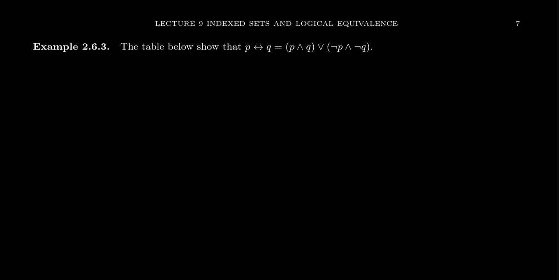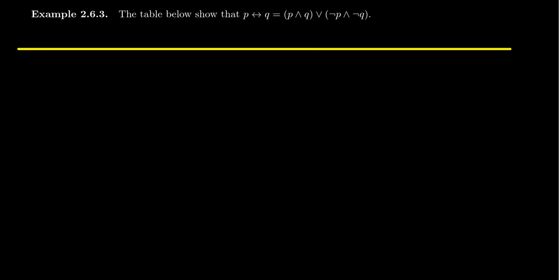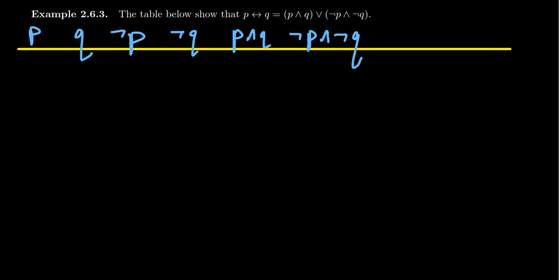Let's do two more examples of showing that statements are logically equivalent. In this example, we're going to construct a table to show that the biconditional statement P is equivalent to Q is the same thing as saying (P and Q) or (not P and not Q). Our table is not going to need many rows because we only have two primitives, P and Q. The things we need to consider are: not P, not Q, P and Q, not P and not Q, then (P and Q) or (not P and not Q), and finally P is equivalent to Q.